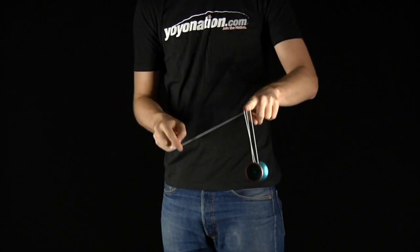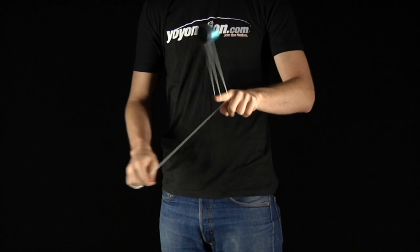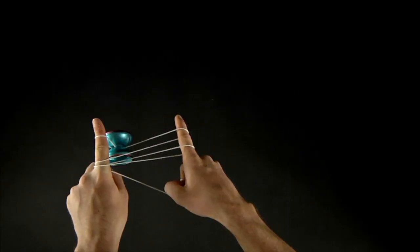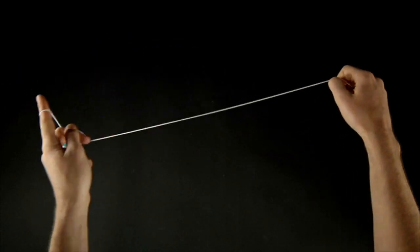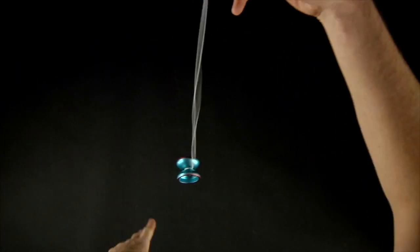Drop the string off your throw finger and perform two somersaults. This will unravel the string off your non-throw finger and end in a trapeze. Dismount and return. The only fingers that you can't use during this trick are your thumbs.